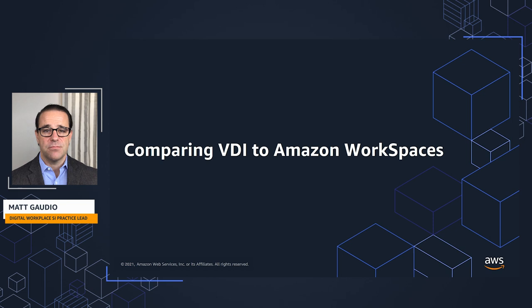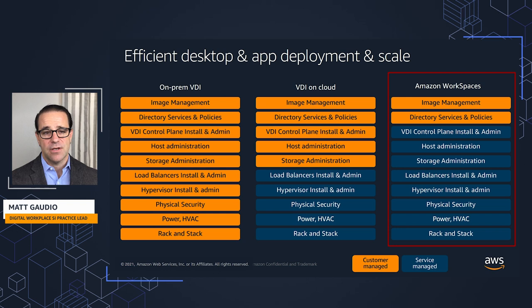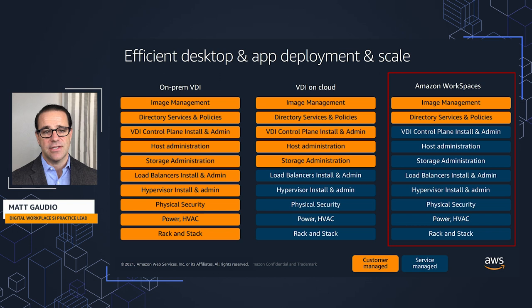To start, let's compare alternatives. The chart in front of you represents three possible deployment models for desktop access for end users. On the very left, we're looking at on-premises virtual desktop infrastructure. In the middle, we've got VDI moved to AWS. And on the right, we've got a fully managed desktop as a service in the form of Amazon WorkSpaces. The color codes show orange for what the customer would manage and blue for what the service provider — in our case, Amazon — would manage.